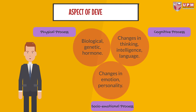Aspects of development: First, physical process, which includes biological, genetic, and hormonal factors. Second, cognitive process — changes in thinking, intelligence, and language. Third, socio-emotional process — changes in emotion and personality.